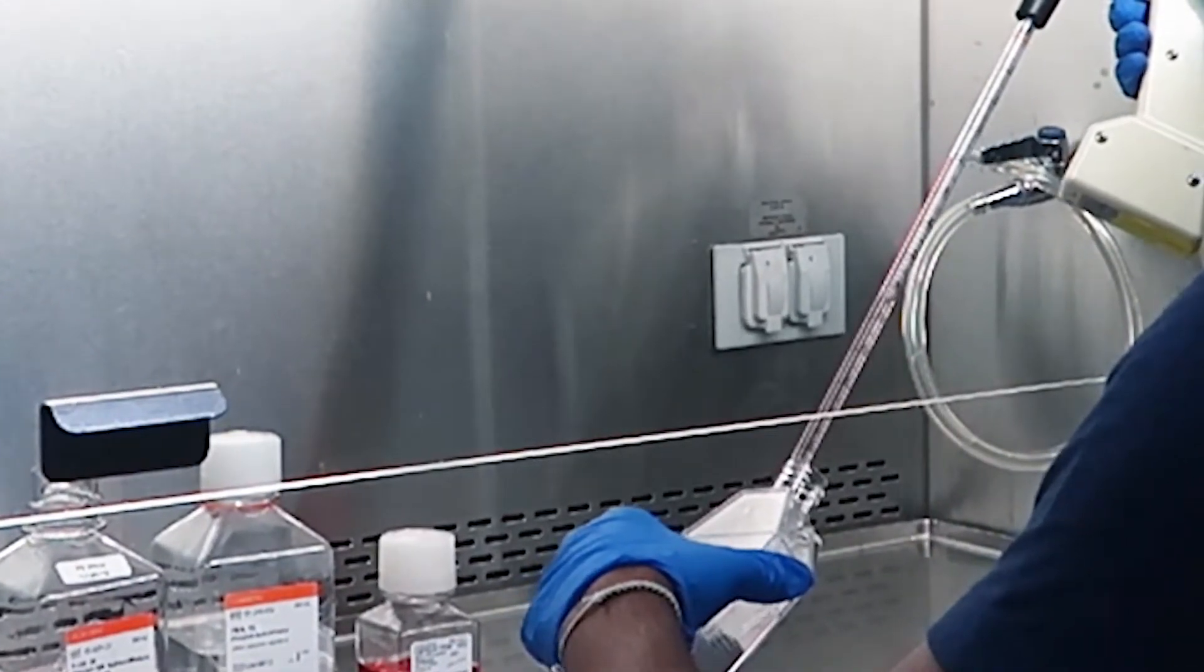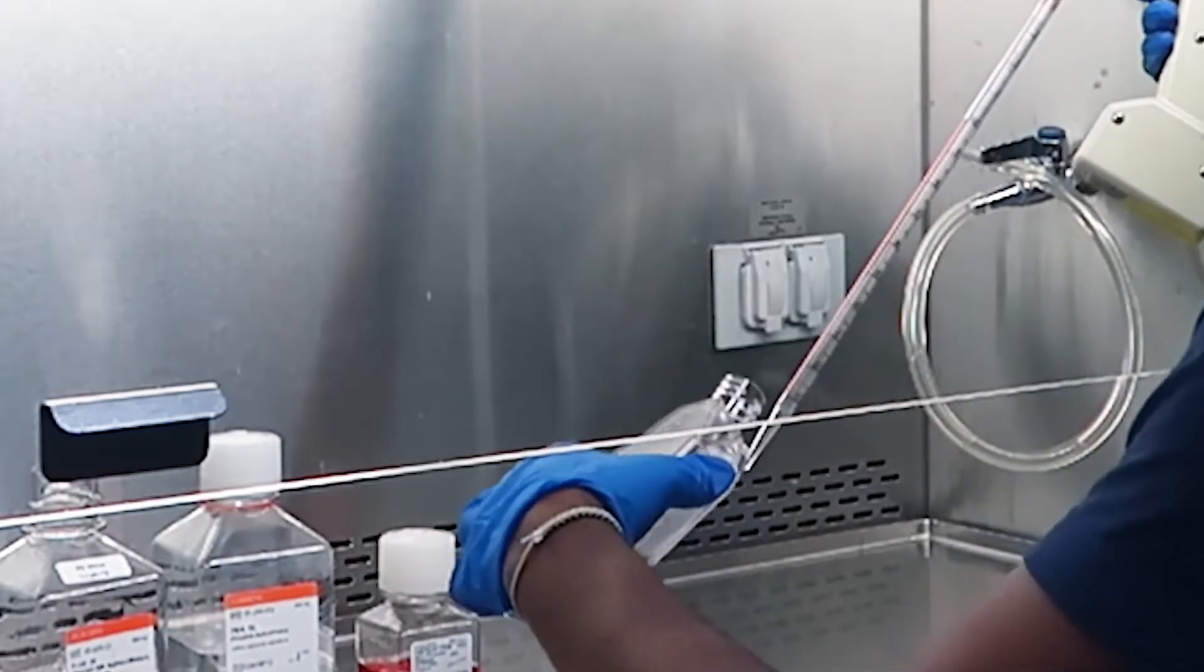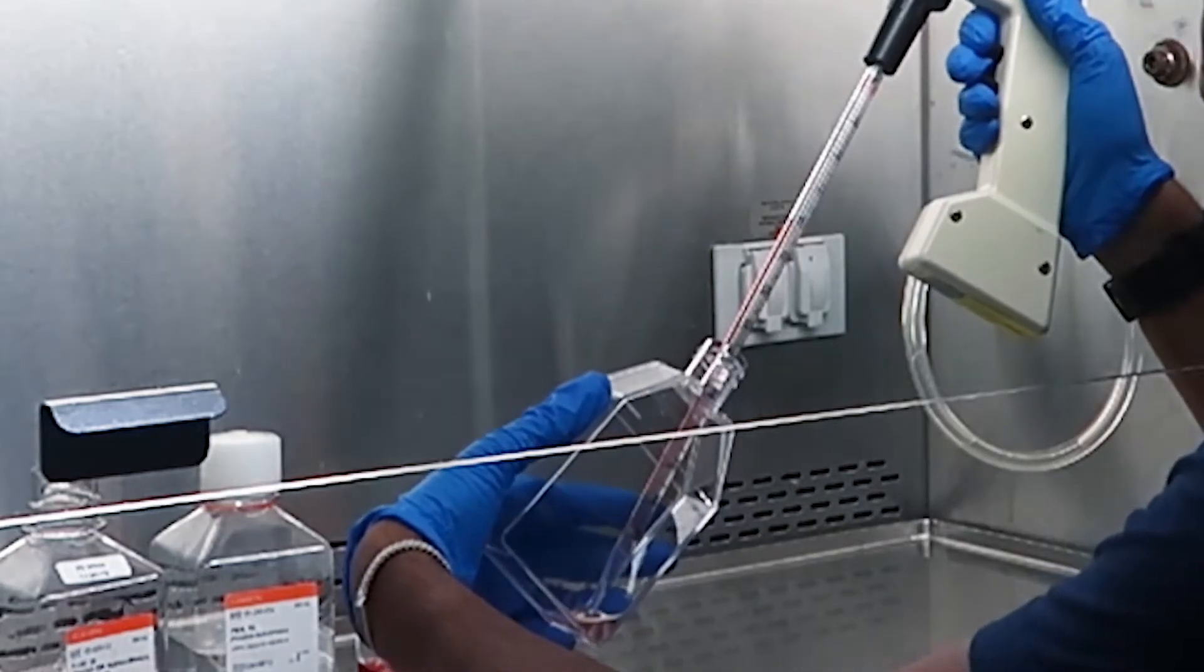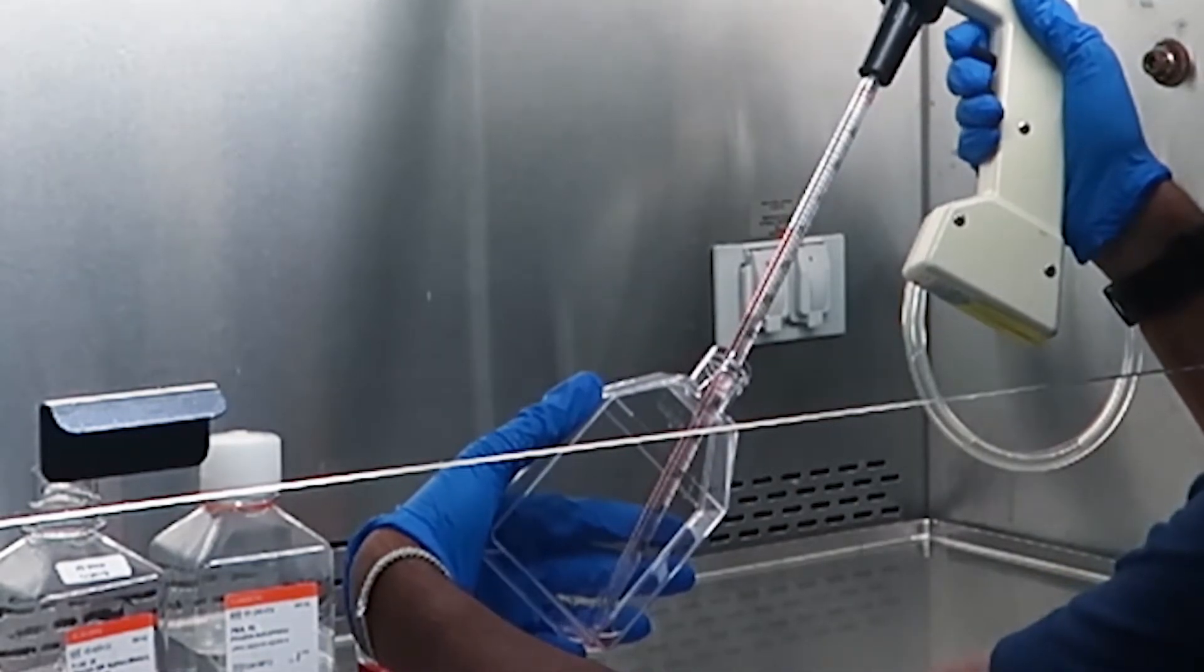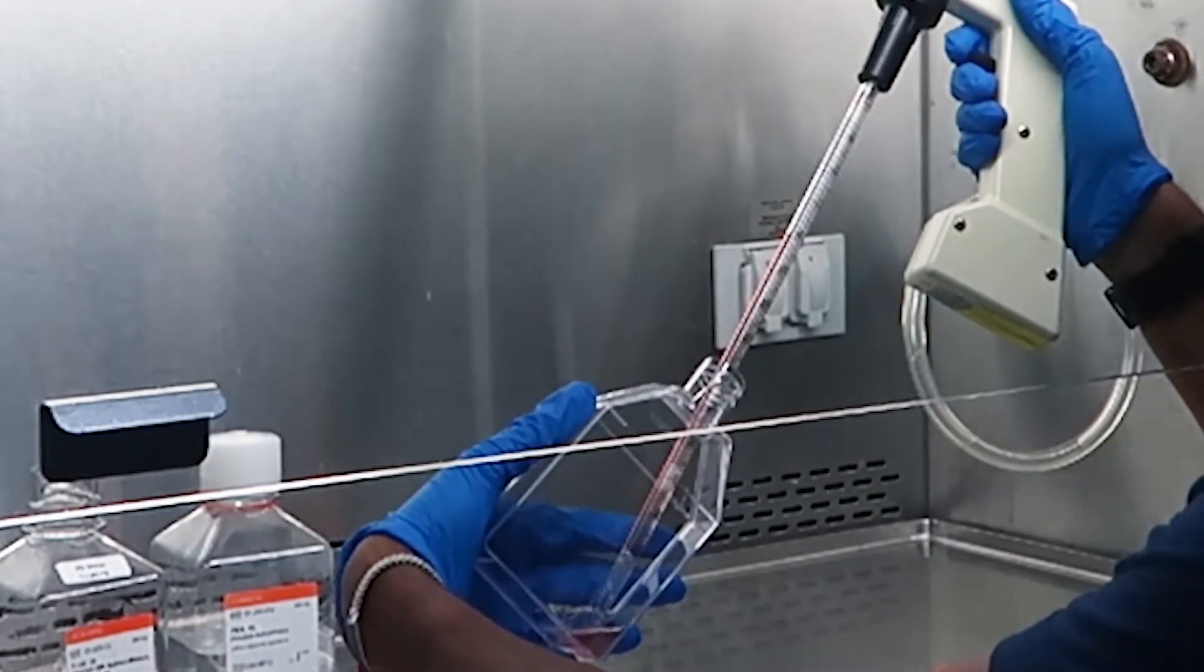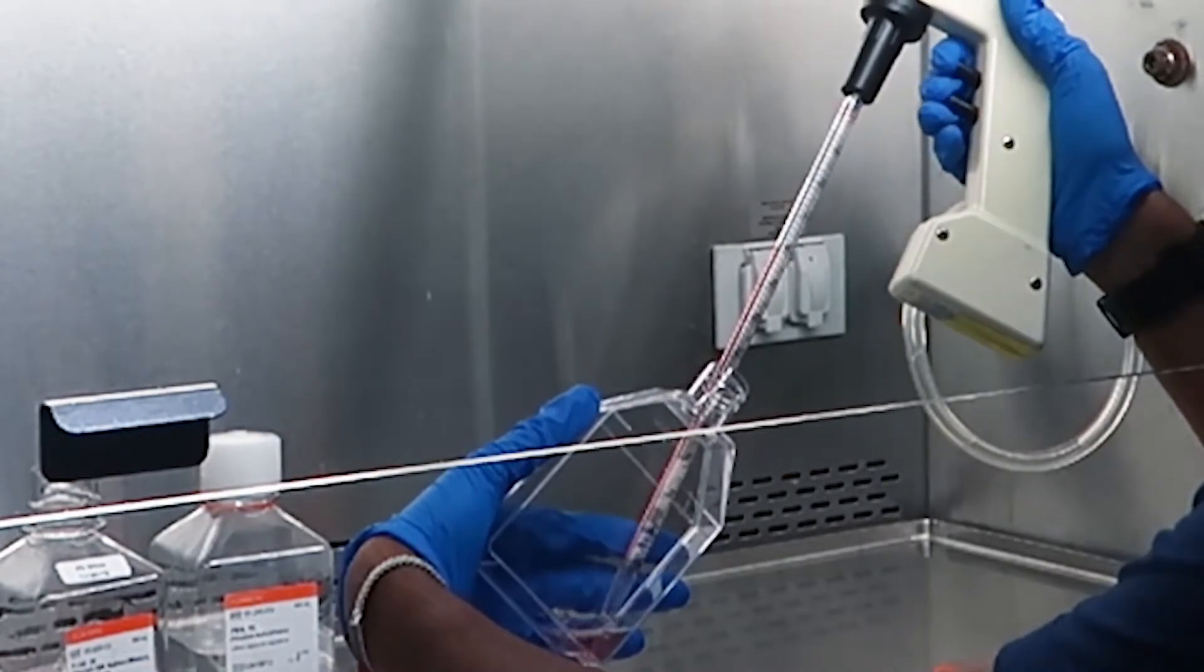Once you add your medium to the flask with trypsin EDTA, you want to rest your pipette at the bottom corner and tilt your flask. At this point, you want to repeatedly pipette the medium up and down. These cells were formerly in a cell monolayer. So you want to disperse the cells into a single cell suspension, which allows for accurate cell counting and uniform growth.